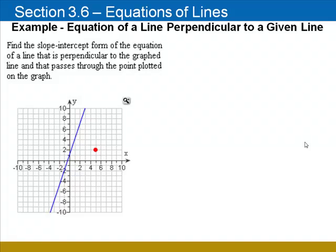A similar problem here, except we're going to look for a line that's perpendicular to the graphed line. Again, we need to begin by finding the slope, and let's take a look at rise over run again.